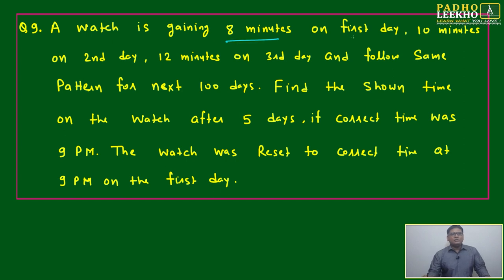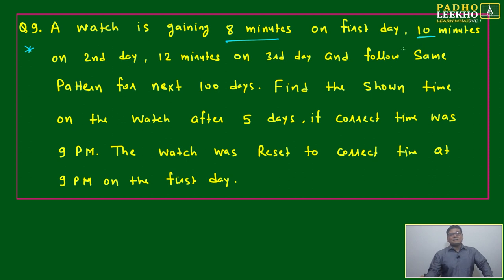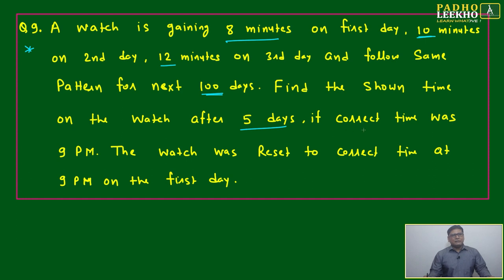A watch is gaining 8 minutes on the first day. Based on that, I framed one question — the gain is not constant but variable: 10 minutes on the second day, 12 minutes on the third day, following the same pattern for the next hundred days. Find the time shown on the watch after five days if the correct time was 9 p.m.